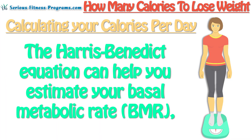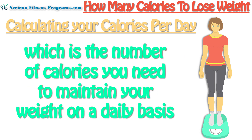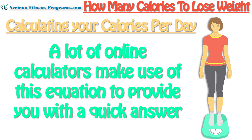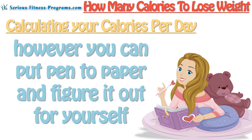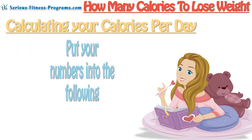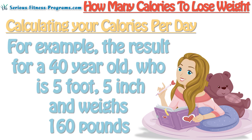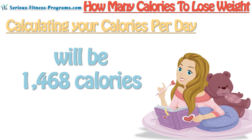Calculating your calories per day: The Harris-Benedict equation can help you estimate your basal metabolic rate, BMR, which is the number of calories you need to maintain your weight on a daily basis, regardless of exercise or other daily activity. A lot of online calculators make use of this equation, but you can also figure it out for yourself: 655 plus 4.35 times your weight in pounds, plus 4.7 times your height in inches, minus 4.7 times your age in years. For example, the result for a 40-year-old who's 5 foot 5 inches and weighs 160 pounds will be 1,468 calories.